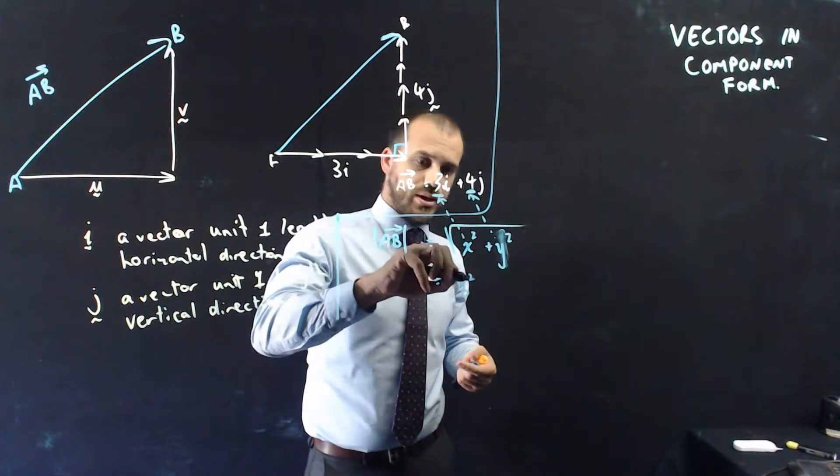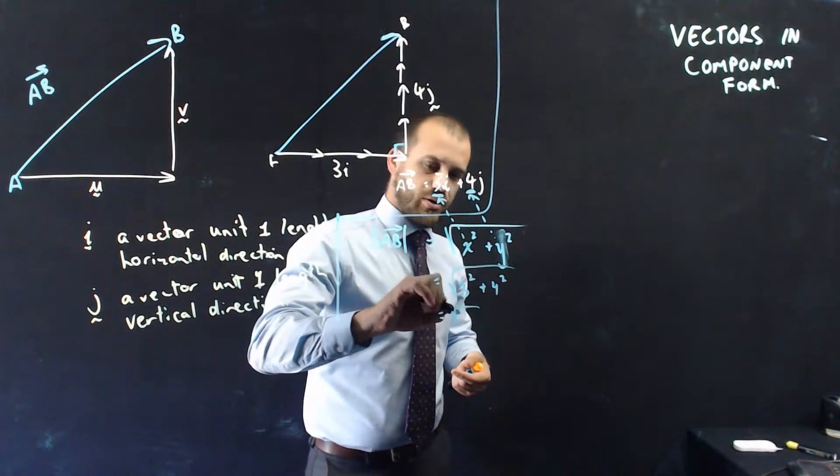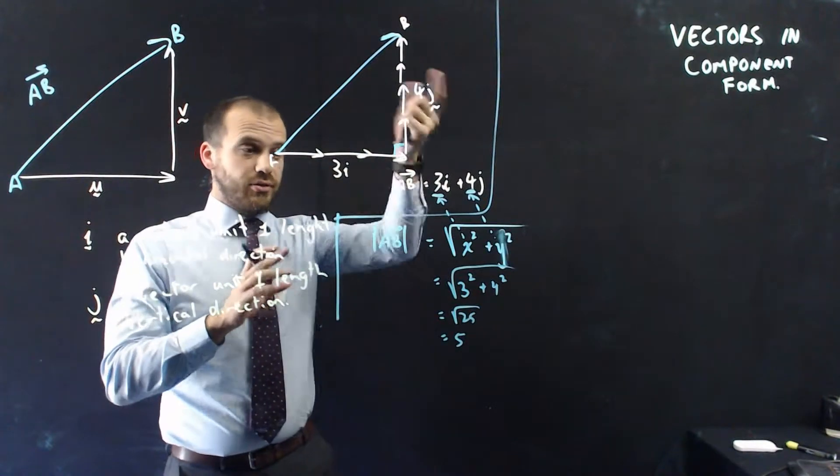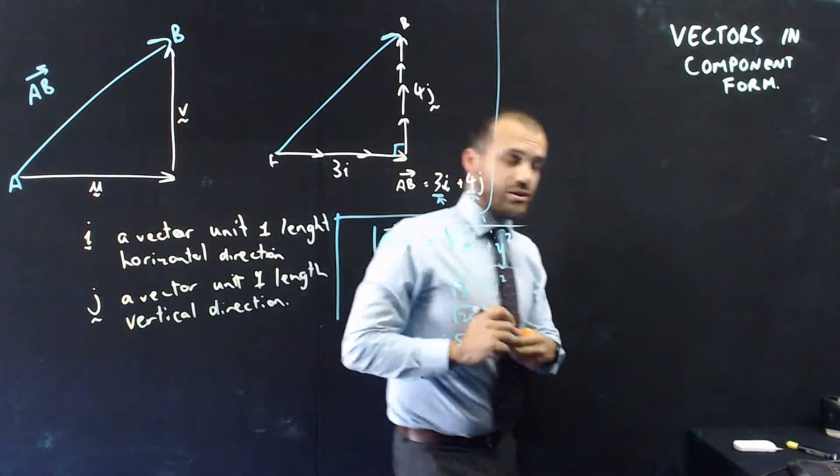All right. So we've got 3 squared plus 4 squared, square root. It's going to be the square root of 25, which, of course, is 5. So the magnitude, the length of vector AB is 5. We've done magnitudes before. This is just a little recap.